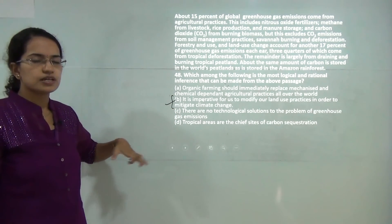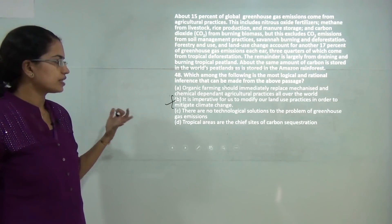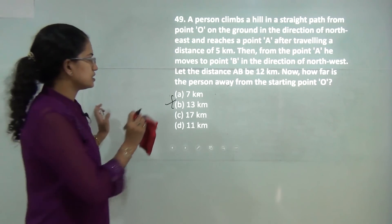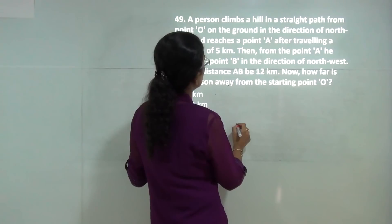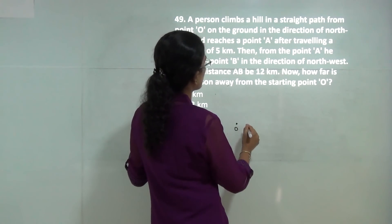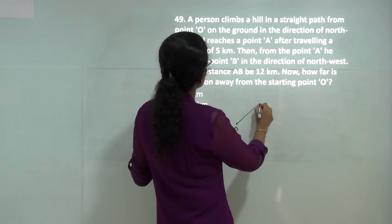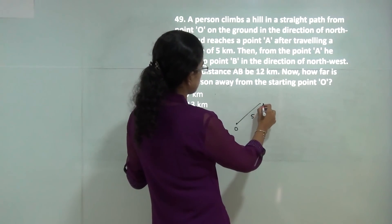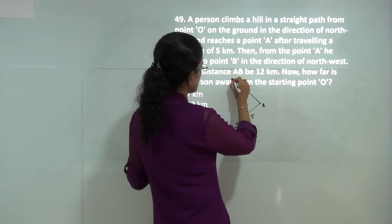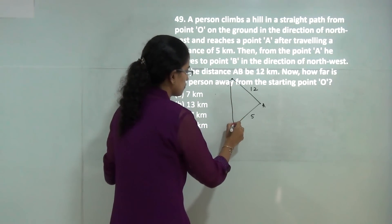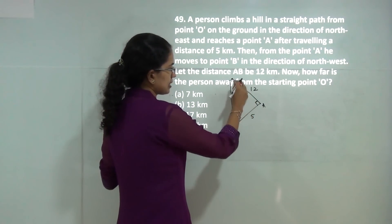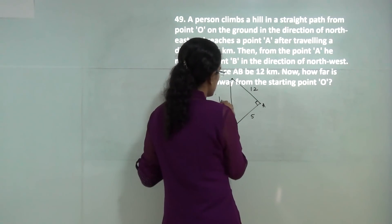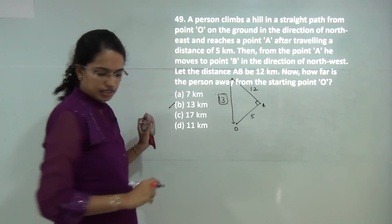This question requires a good critical understanding of environmental topics. Starting from point O on the ground going northeast, reaching point A after 5 kilometers, then from A to B in the northwest direction for 12 kilometers. The angle between northeast and northwest forms a right angle, so Pythagoras applies. The distance from O to B is the square root of 12 squared plus 5 squared, which equals 13. So the answer is 13.